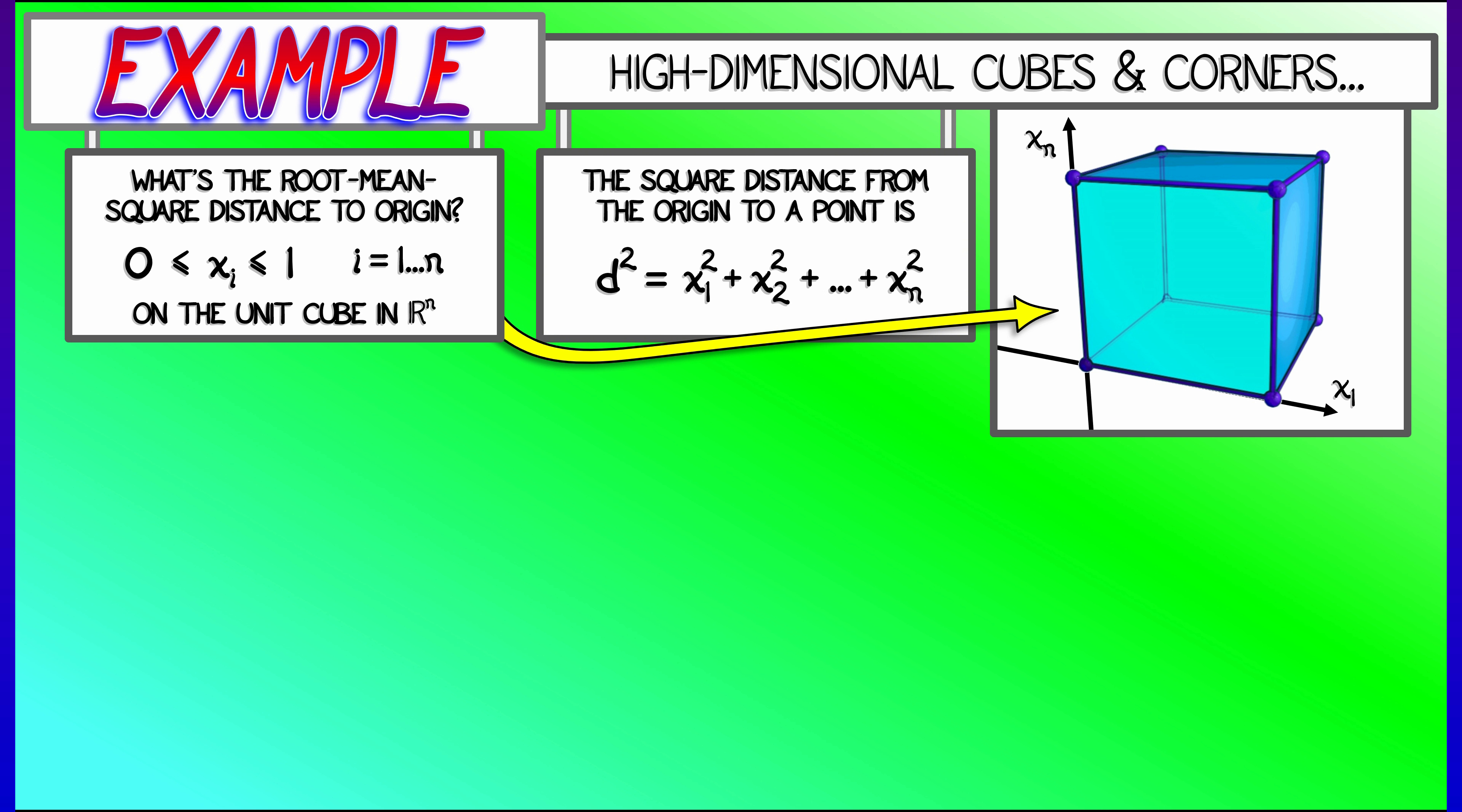Now, to compute the root-mean-square distance, first I take the distance squared. That is x_1 squared plus x_2 squared, all the way up through x_n squared.